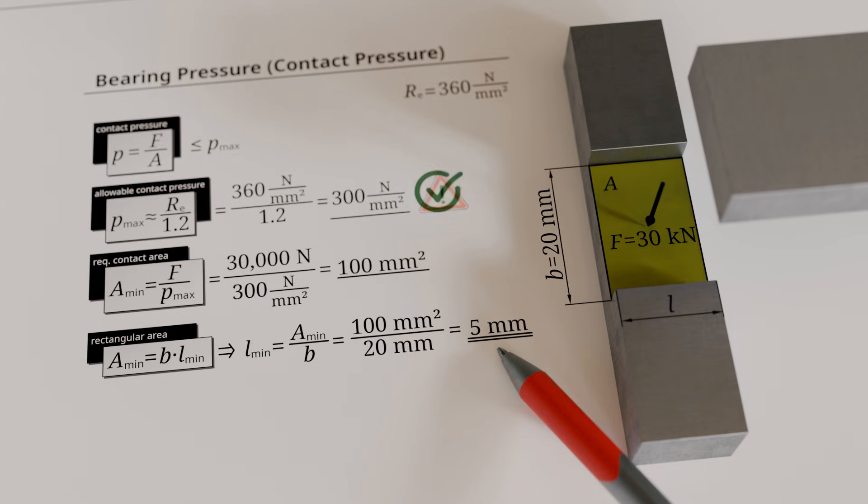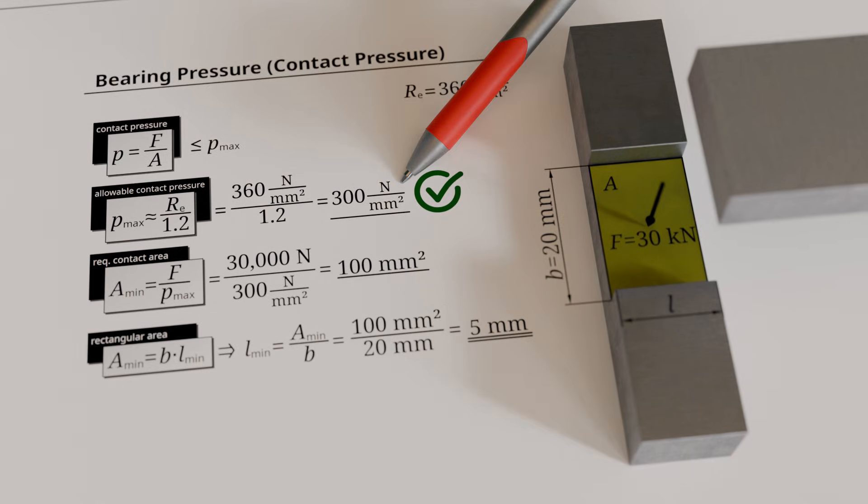With this length, the maximum allowable bearing pressure of 300 newtons per square millimeter is not exceeded.